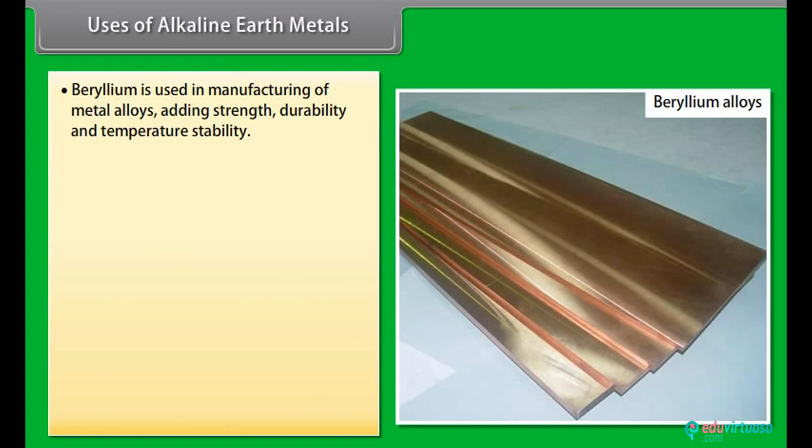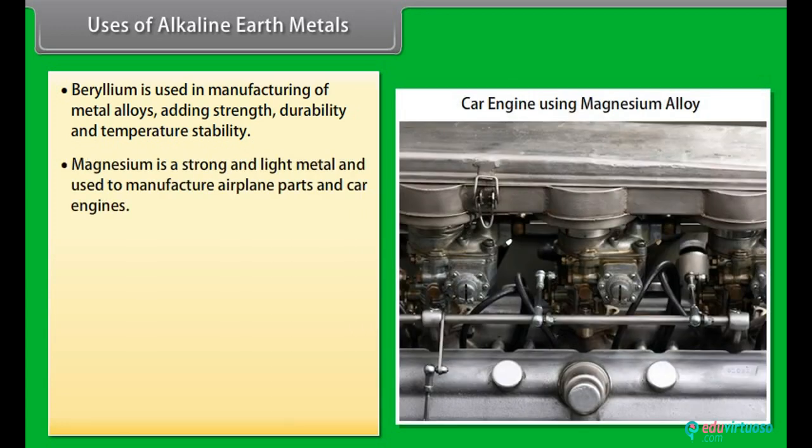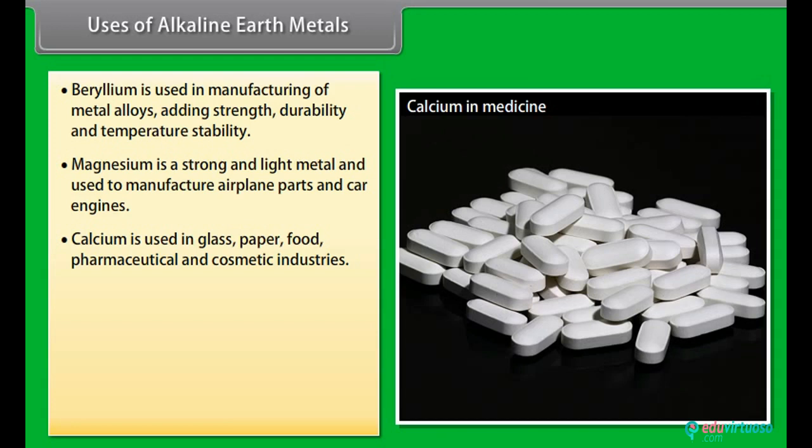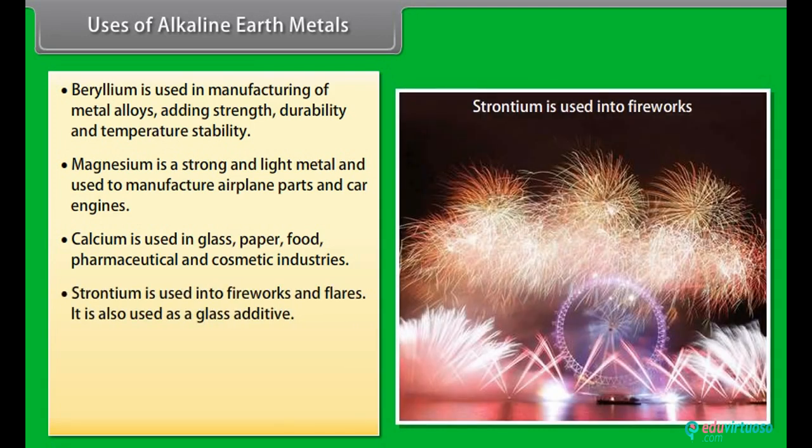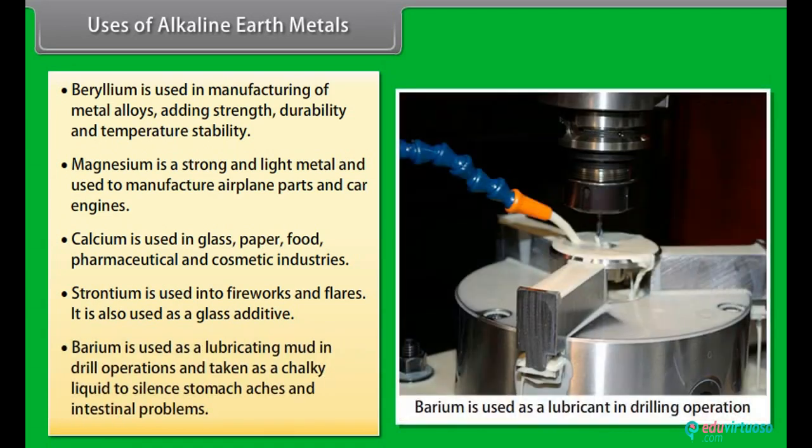Uses of alkaline earth metals: Beryllium is used in manufacturing of metal alloys, adding strength, durability, and temperature stability. Magnesium is a strong and light metal and used to manufacture airplane parts and car engines. Calcium is used in glass, paper, food, pharmaceutical, and cosmetic industries. Strontium is used in fireworks and flares. It is also used as a glass additive. Barium is used as a lubricating mud in drill operations and taken as a chalky liquid to silence stomach aches and intestinal problems.